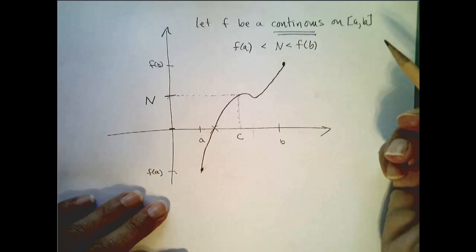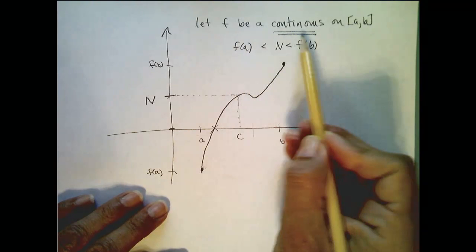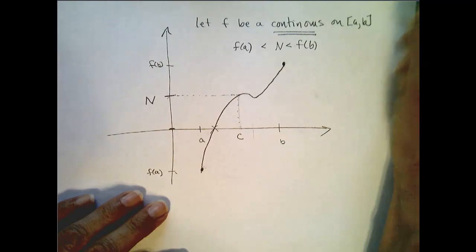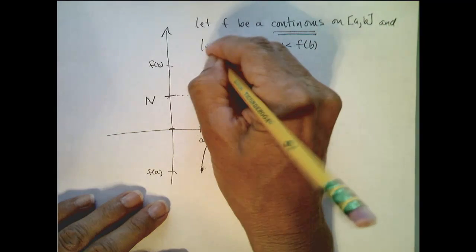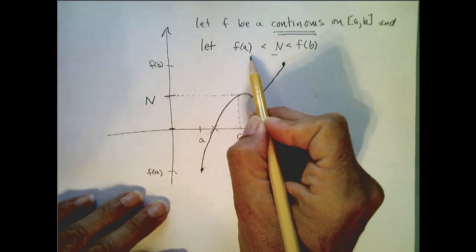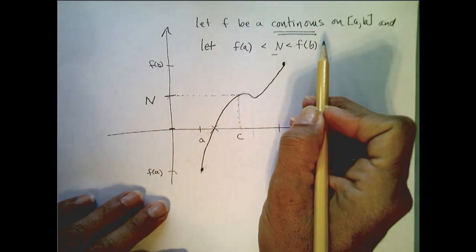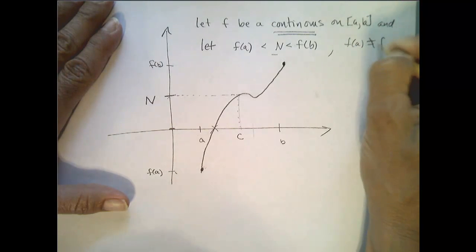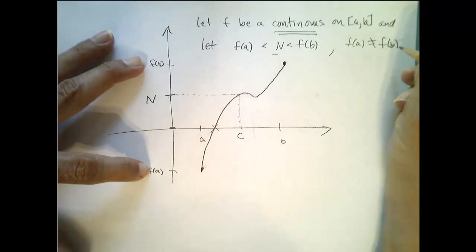Do you agree with that? So let me see if I can write that again. If f is a continuous function on a closed interval a, b, and let's let n be such that it's between f of a and f of b. And let's make a condition that f of a is not equal to f of b. So these must be two different values.